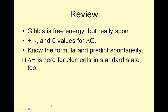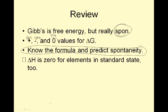That, by the way, was an AP chemistry question — so good job, we are AP smart. To review: Gibbs free energy is really about spontaneity. Positive, negative, and zero values for delta G correspond to non-spontaneous, spontaneous, and equilibrium. Know the formula and predict spontaneity. Delta H and delta G are both zero for elements in the standard state. I hope you guys are having a fun time in Mexico — and if you're like me and not in Mexico, then toodles.